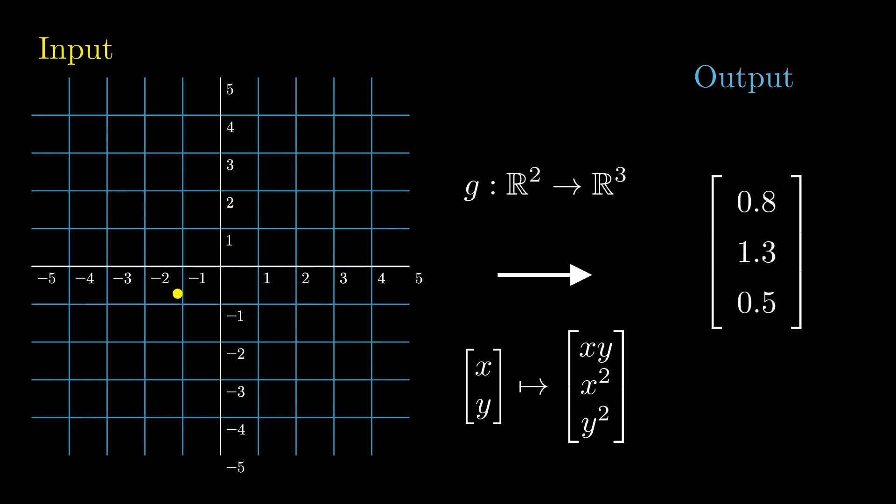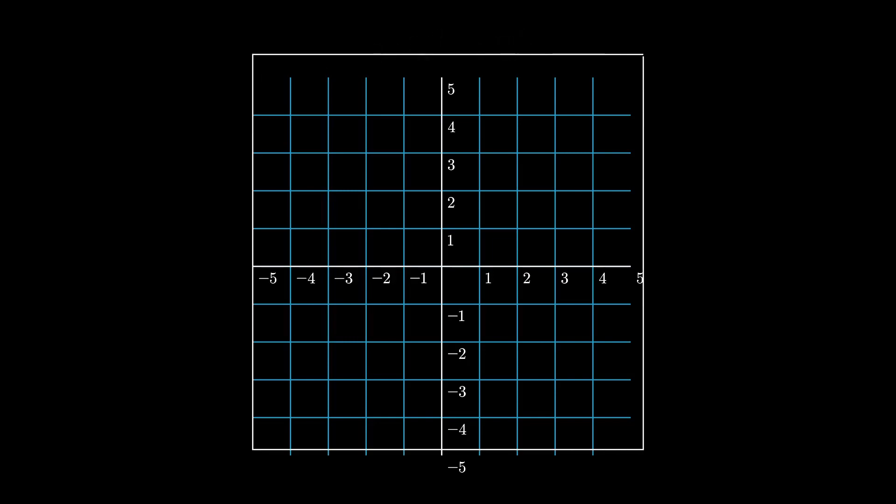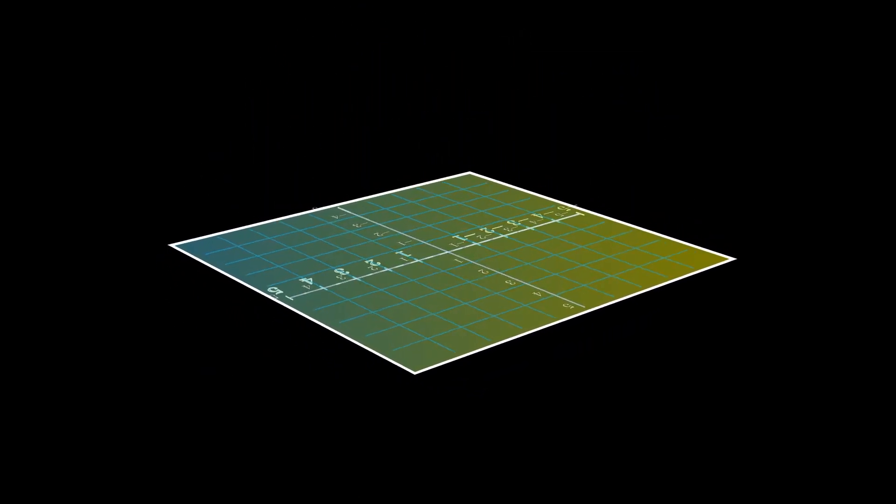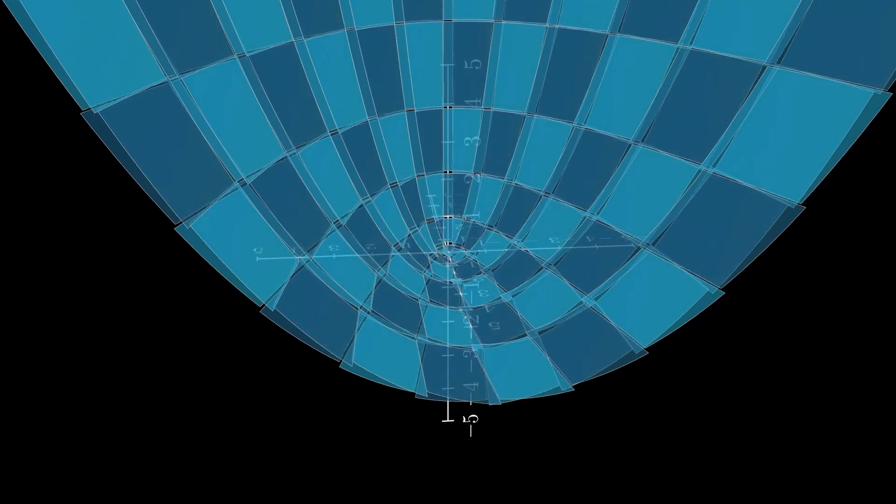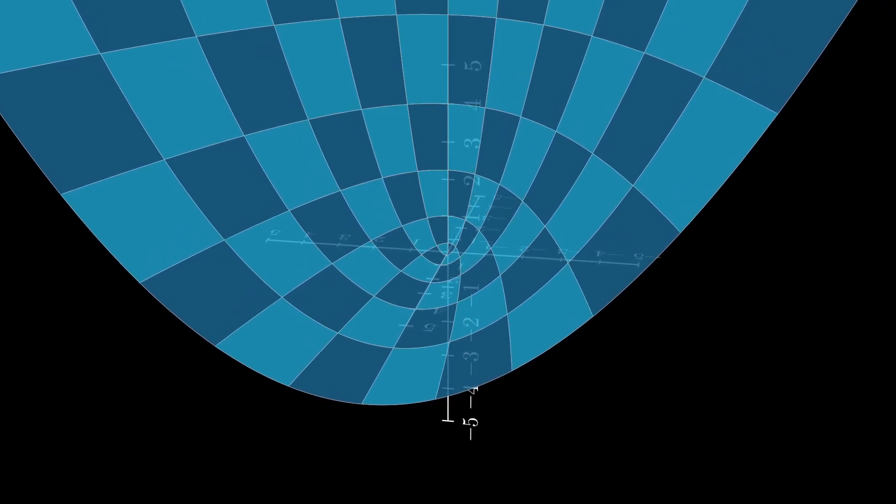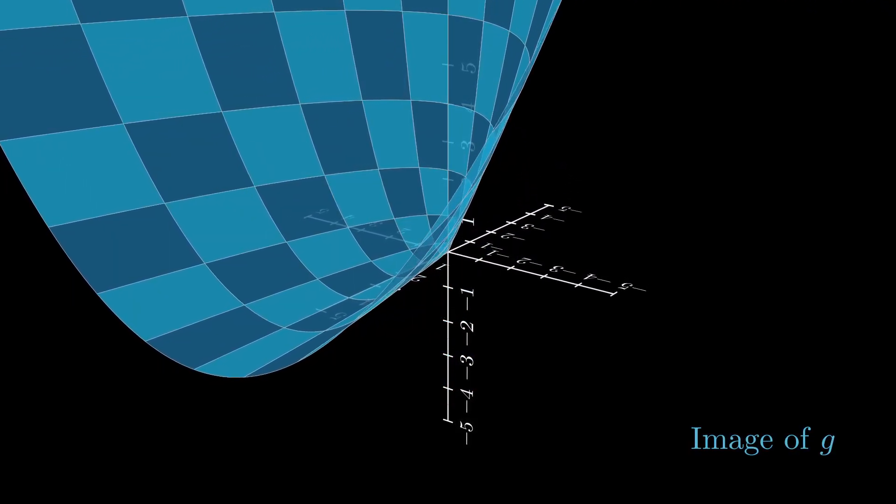Instead of looking at what a function does to points though, it's often more constructive to consider what a function does to all points at the same time. And by modeling our inputs as a plane, we see that our function transforms our 2D input into some 3D shape. This is called the function's image.